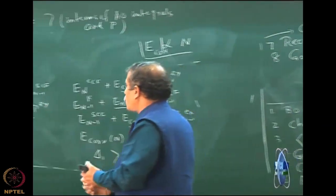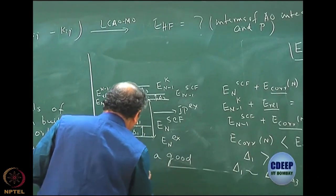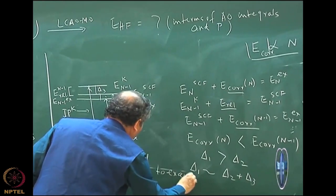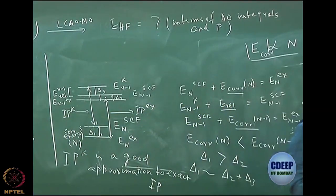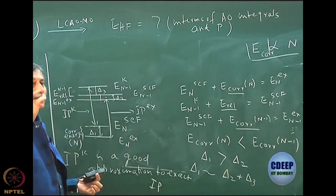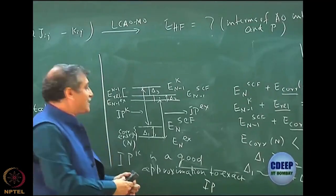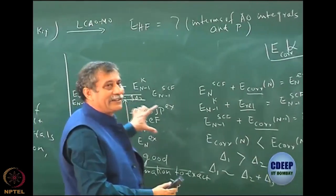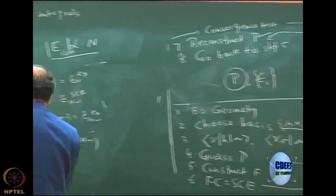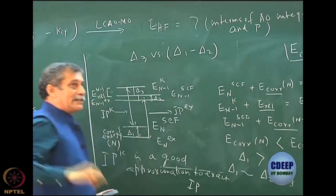This argument shows that IP Koopmans is a good approximation to IP exact, but it is not exact — it cannot be exactly equal. It is a good approximation to exact IP. If it is the outermost orbital, the relaxation is small. But if it is a core orbital, delta 3 becomes very large, so delta 1 minus delta 2 will not compensate, and then it will become bad.